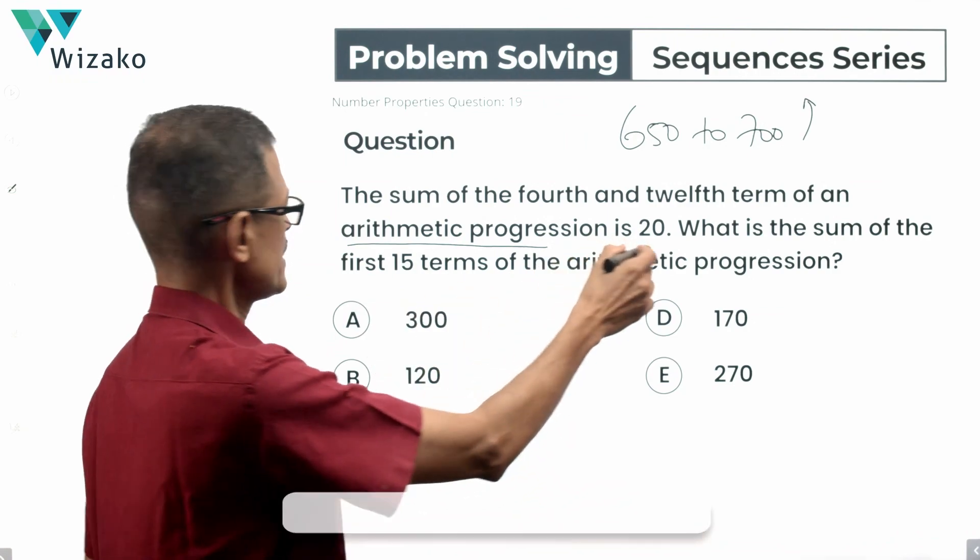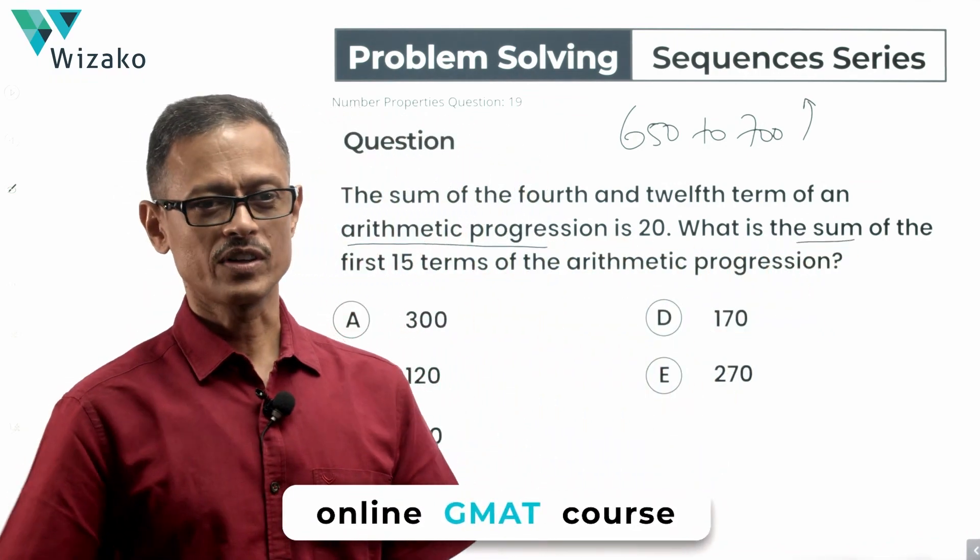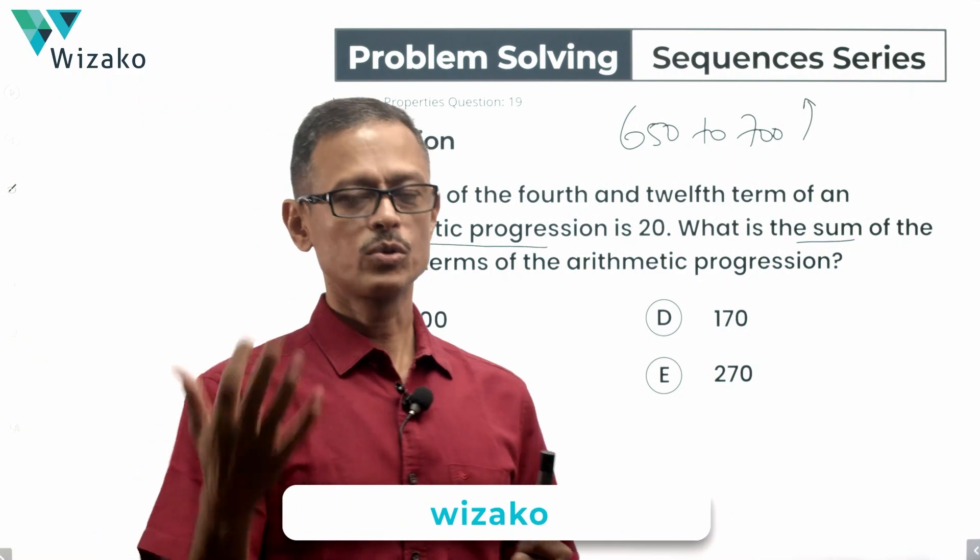We are talking about essentially sum of some number of terms of an arithmetic progression. Take a look at the question and see how to solve this.